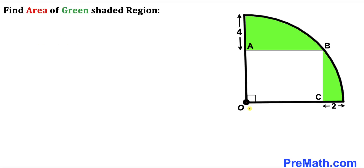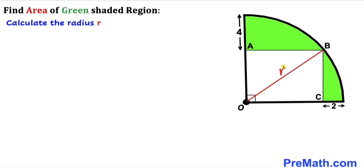Let's go ahead and connect this center O with point B, as you can see in this next diagram. We can see that line OB is the radius of this quarter circle. Let me represent this radius by lowercase r, and now we are going to calculate the value of r.